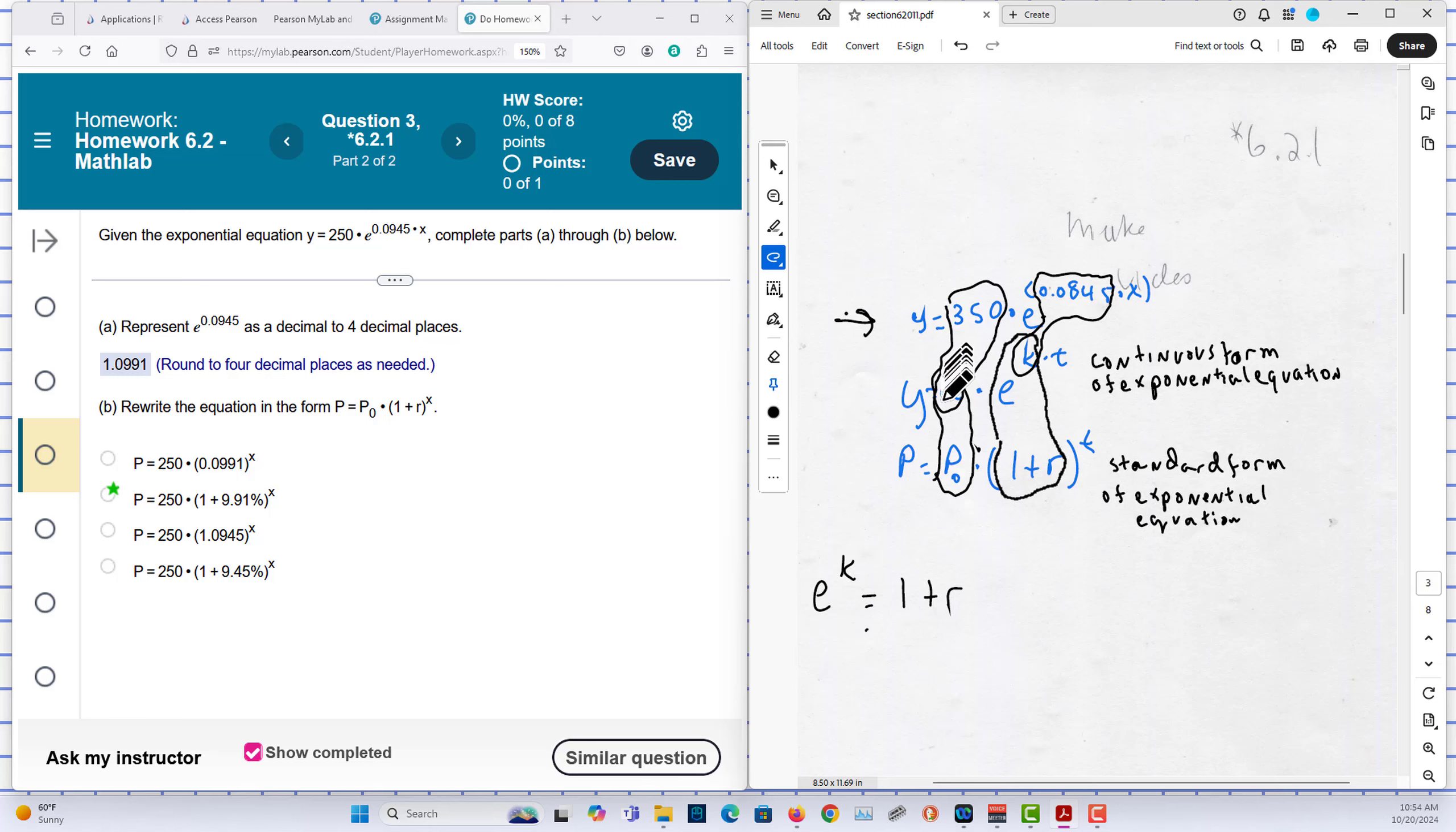I circled the relationships here. To get into the form they want, P equals P0 times 1 plus R to the x. From here, you can see that P0 maps to A and A maps to 350. So that tells me that P0 is equal to 350.